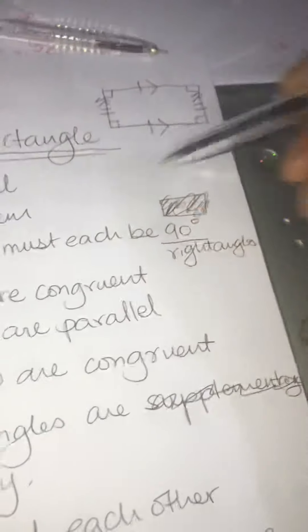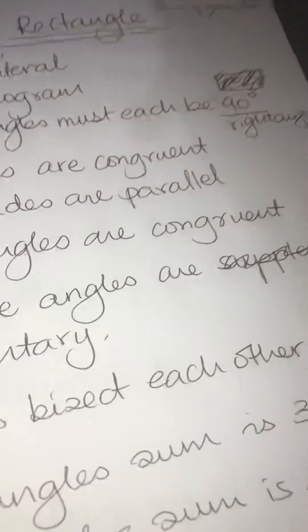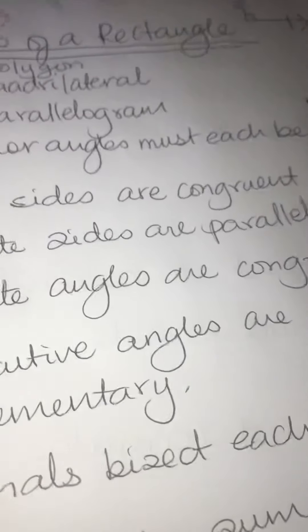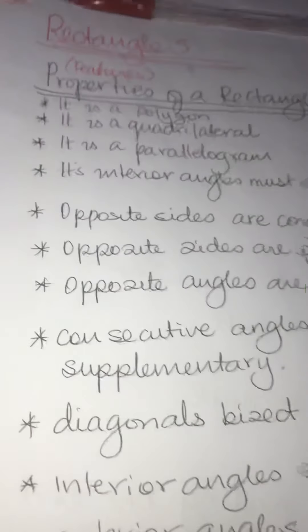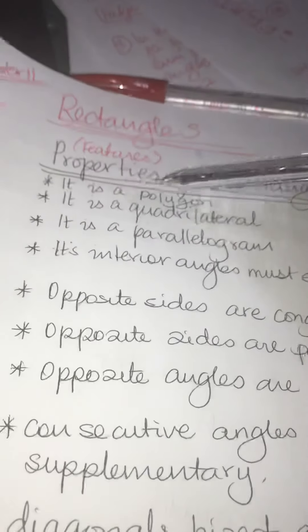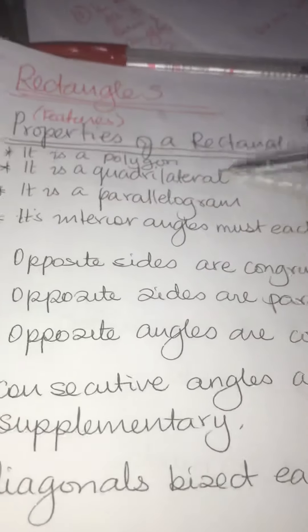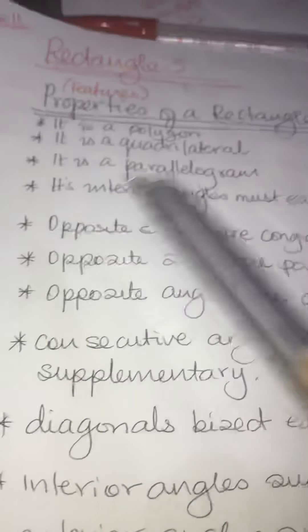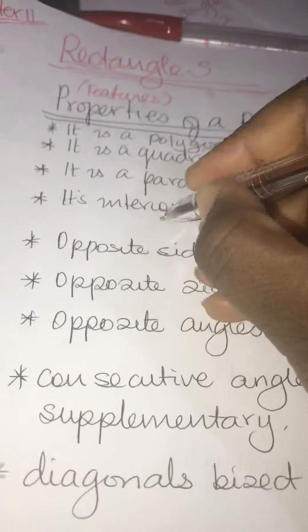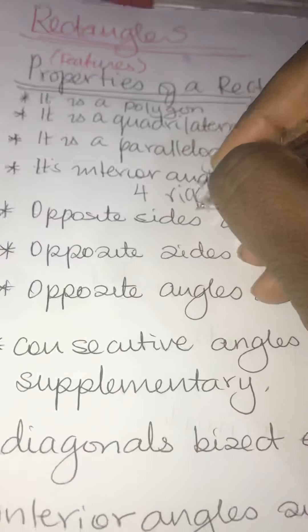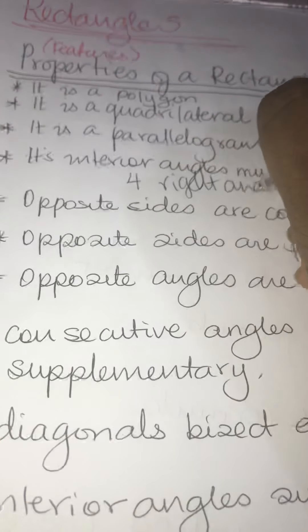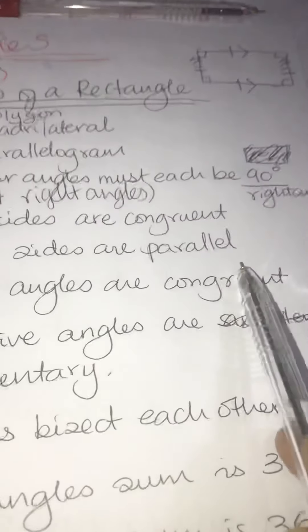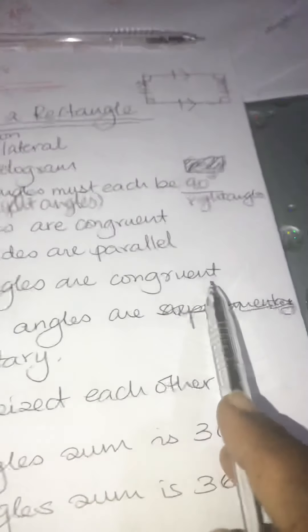So this is a rectangle. When you see a shape drawn like that, you definitely know it is a rectangle. These are the features — we go through them one by one. It is a polygon, it is a quadrilateral, it is a parallelogram, its interior angles must each be 90 degrees — you need four right angles. Opposite sides are congruent, opposite sides are parallel, and opposite angles are congruent.